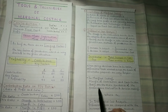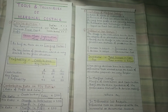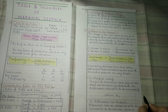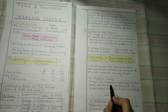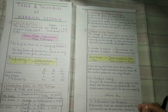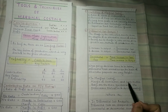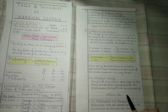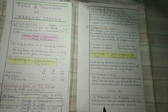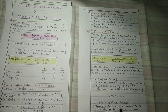In marginal costing, margin of contribution and contribution ratio are the main yardsticks for performance evaluation and decision making. We look at what percentage of total sales is contribution — based on these factors we evaluate performance and make decisions. Whereas in differential cost analysis, differential costs are compared with incremental and decremental revenue to determine which alternative course of action will be beneficial.